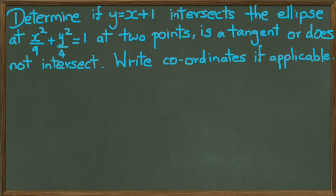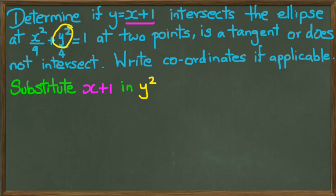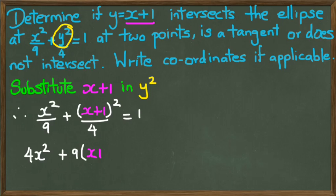So the first thing what we want to do is we're going to substitute x plus 1 into y squared because y is equal to x plus 1. And when we do that, we're going to end up with our ellipse equation with no y's. And just simplifying, we're going to end up with 4x squared plus 9 times x plus 1 squared which equals 36.